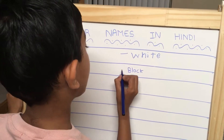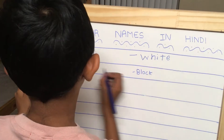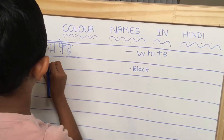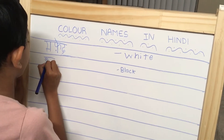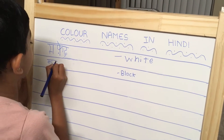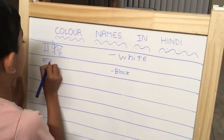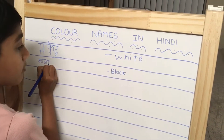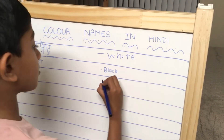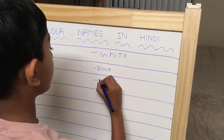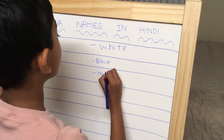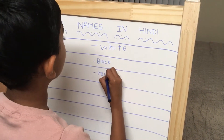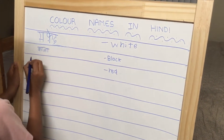Black is called Kala. Red is called Lal.